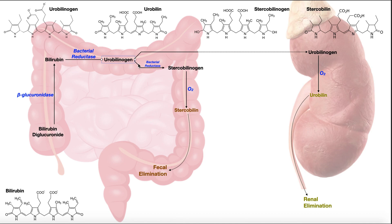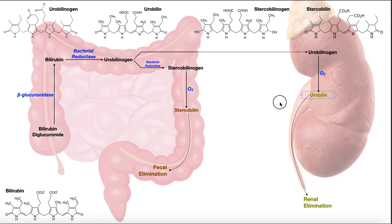Back to urobilinogen: while some remains in the colon and is reduced to stercobilinogen, some of that urobilinogen can actually be moved from the colon to the kidney. Something very similar happens there — it can be oxidized by molecular oxygen into urobilin, in the same way that stercobilinogen was oxidized into stercobilin. The kidney is also technically an open system considering the urethra and bladder, so there's oxygen present. Urobilinogen is oxidized into urobilin, which emits in the yellow region of the visible spectrum. Urobilin is what is primarily responsible for the yellow color of urine, and it is eliminated in the urine.